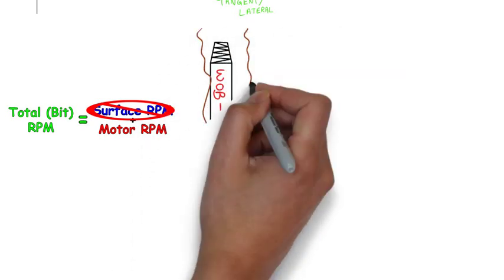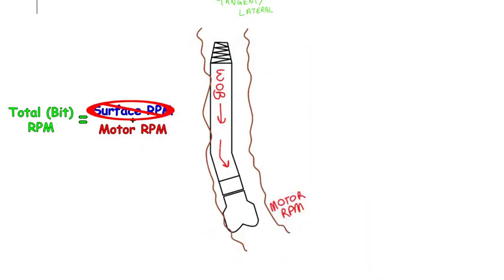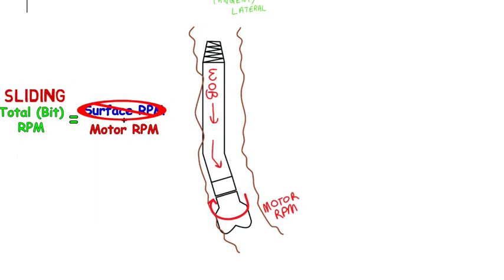Once the assembly is oriented in the right direction, weight is applied and the bit turns only by the power of the motor. Drilling in this mode is called sliding because the entire drill string has to slide against the borehole wall.